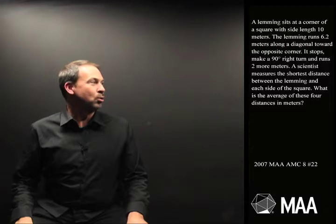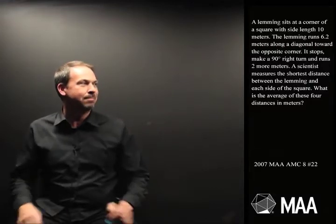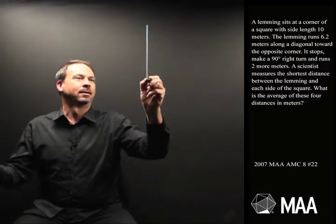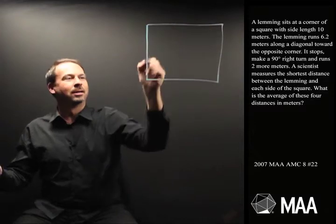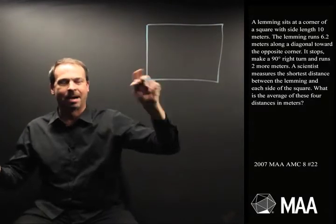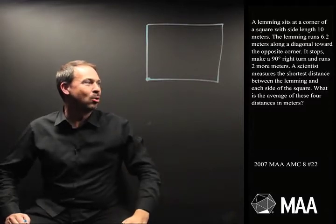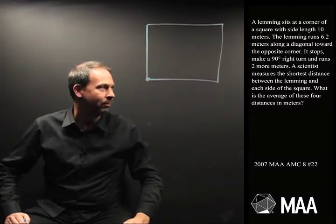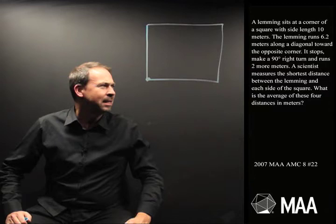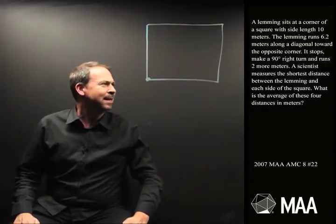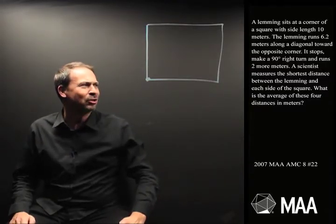A lemming sits at the corner of a square with side length 10 metres. I'm going to draw a square. So I've got a lemming, a little creature, sitting at one corner, side length 10. The lemming runs 6.2 metres along a diagonal towards the opposite corner, and it stops and makes a 90 degree right turn and runs two more metres.